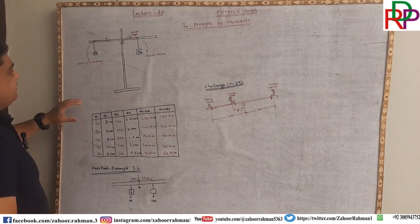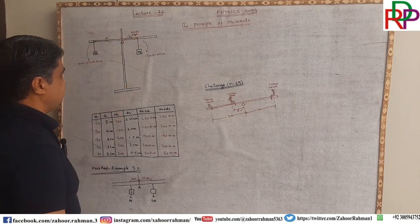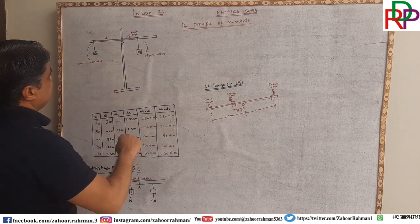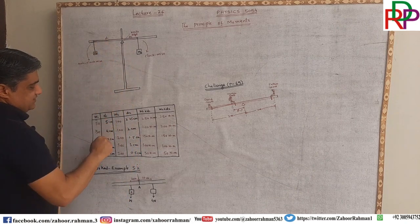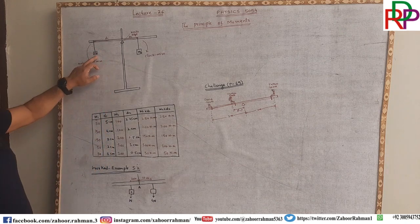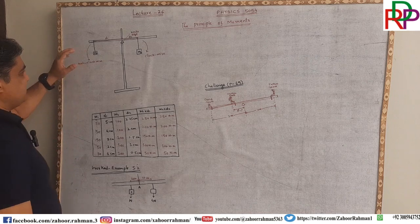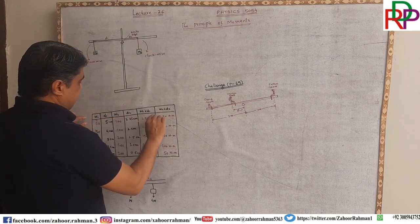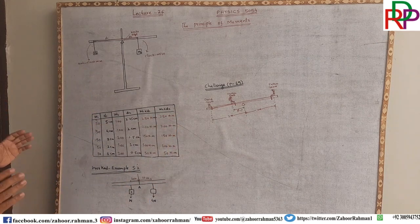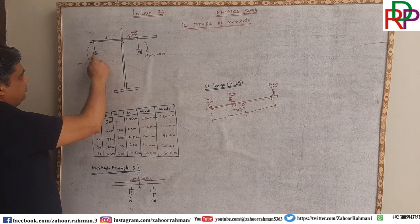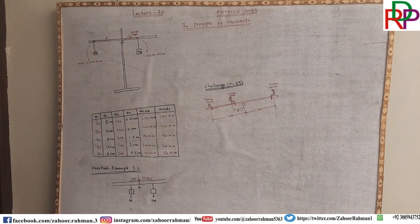We are performing this experiment to explain the principle of moments. The experiment shows that we adjust these distances D1 and D2. The masses are fixed: this is 50 grams and this is 100 grams. We have a table in which we have to perform five sets of different data.